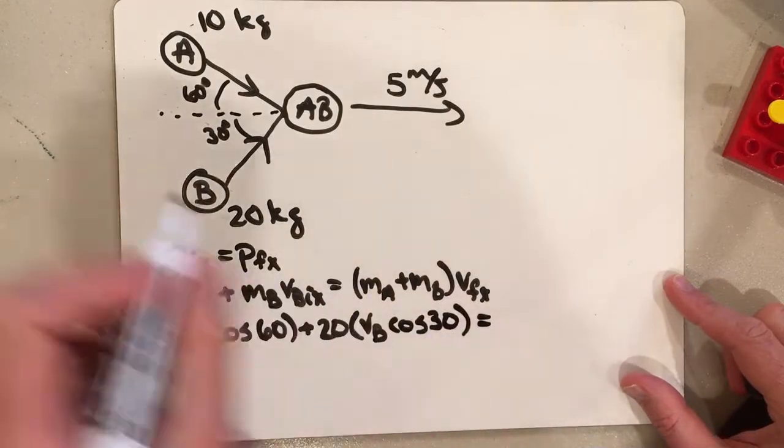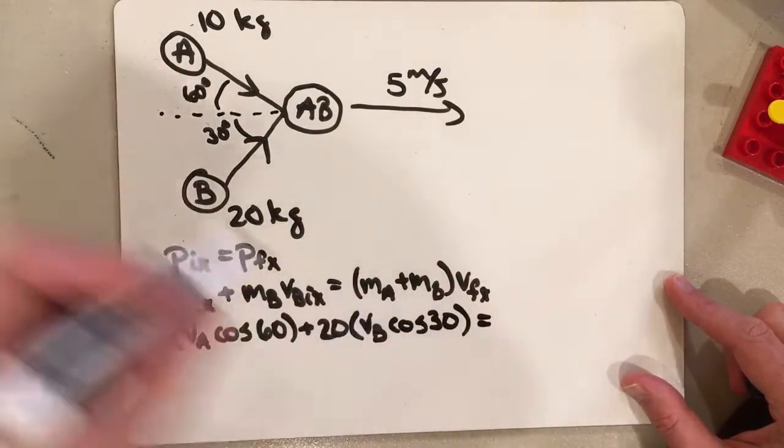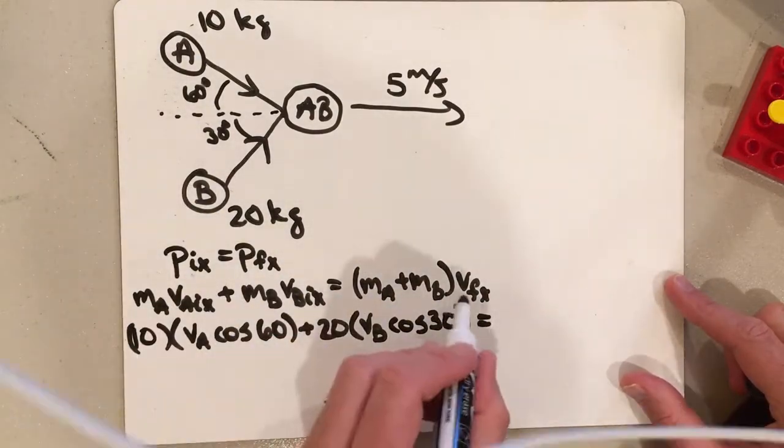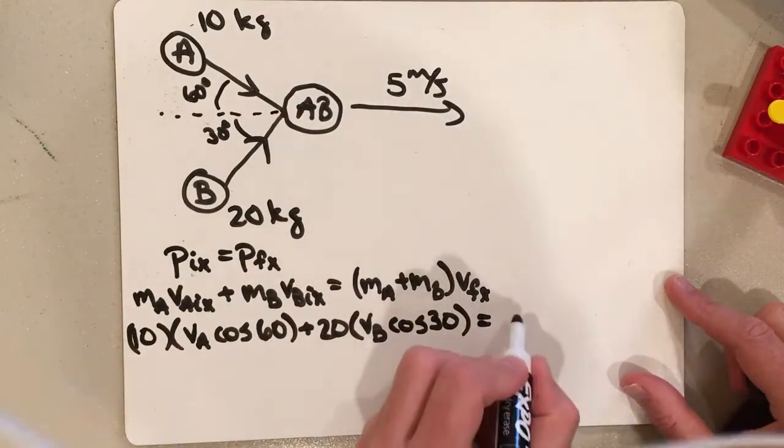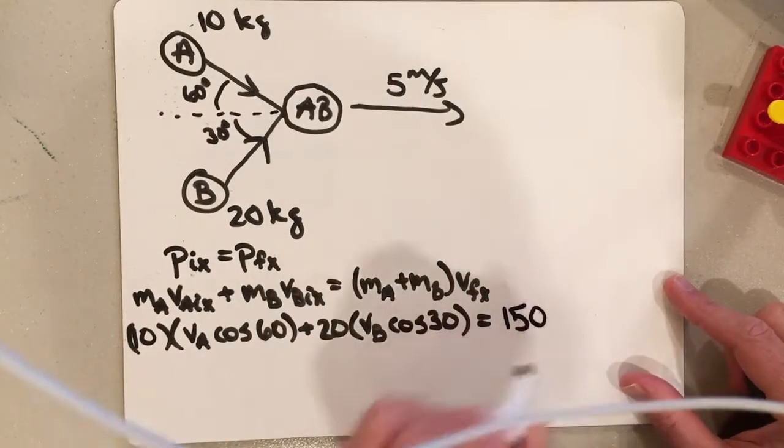And then over here, 10 plus 20, I'm adding the masses together. 10 plus 20 is 30, and then 30 times 5, that's going to be 150.